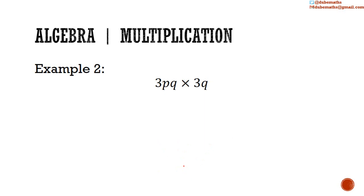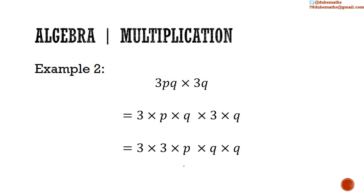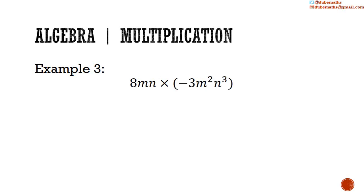A second example: 3pq multiplied by 3q. That is equal to 3 multiplied by p multiplied by q multiplied by 3 multiplied by q, which is equal to 3 multiplied by 3 multiplied by p multiplied by q multiplied by q. 3 multiplied by 3 is 9. Then q to the first power multiplied by q to the first power: 1 plus 1 equals 2, so it's q squared. The result is 9pq squared.